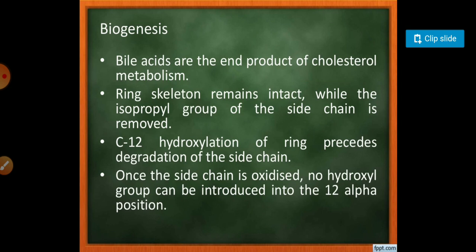Regarding biogenesis, bile acids are the end products of cholesterol metabolism. The ring skeleton remains while the isopropyl group of the side chain is removed. Carbon-12 hydroxylation of the ring precedes the degradation of the side chain. Once the side chain is oxidized, no hydroxyl group can be introduced to the 12-alpha position.